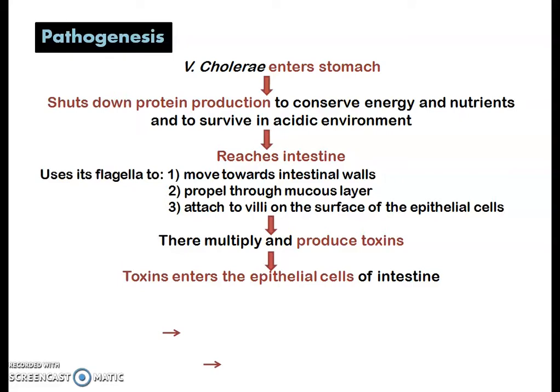It uses its flagella to propel through the mucus layer that lines the intestine, and finally attaches to the villi on the surface of the epithelial cells lining the intestine. Villi are finger-like projections present on the epithelial cells of the intestinal wall. Once attached to the villi, Vibrio cholerae multiplies and produces toxins.